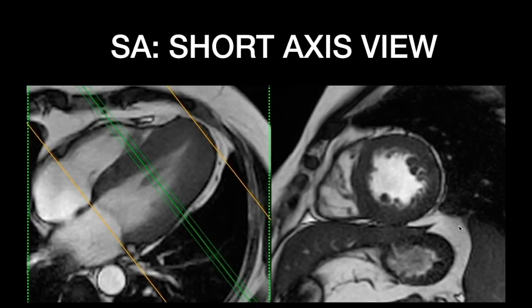The next view is the short axis view. Using the near four-chamber view, draw a plane perpendicular to the interventricular septum and acquire images from the base of the atria toward the apex, or from the level of the mitral valve toward the apex. Slice thickness can be 5–10 mm, but crucially there must be no inter-slice gap, as we need accurate volume calculations and functional assessment of both the left and right ventricle from the short axis stack.